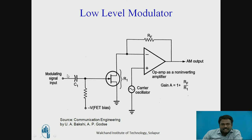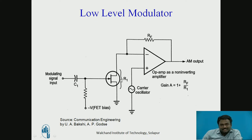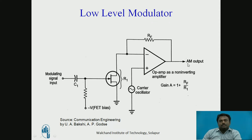In the negative cycle, when the modulating signal is going from 0 to negative peak, the resistance value of the field effect transistor increases, which in turn decreases the gain of the amplifier, which in turn decreases the amplitude of the AM output.